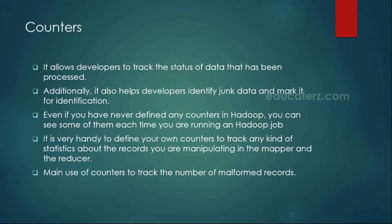Additionally, if you want to write your own custom code to identify any junk data in the input file, or if you have any malformed records — for example, in the word count example, if a word starts with a number instead of a character a to z, that is junk data. If any word starts with a special character other than a to z, that is also junk data. You can create your own custom counters to track that information.